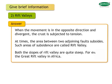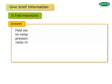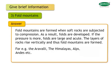Fold mountains are formed when soft rocks are subjected to compression. As a result, folds are developed. If the pressure is more, folds are large and acute. The layers of rocks rise vertically and thus fold mountains are formed. For example, the Aravali, the Himalayas, Alps, Rockies, and Andes.